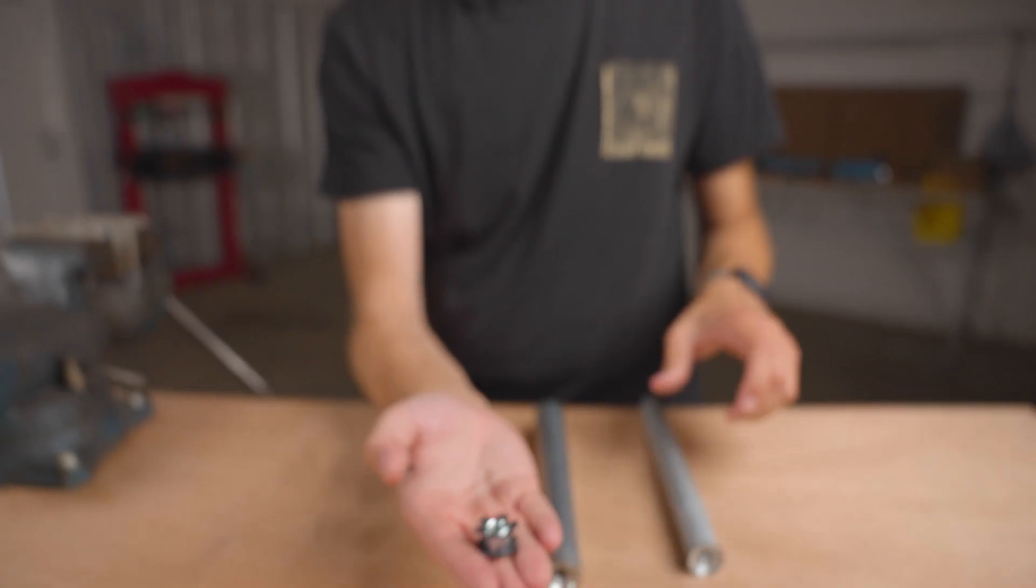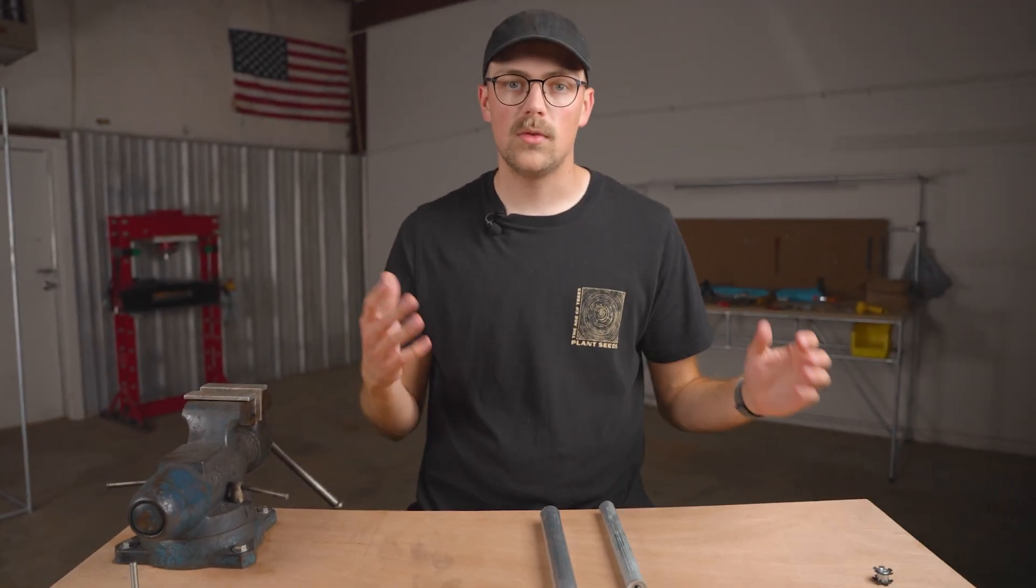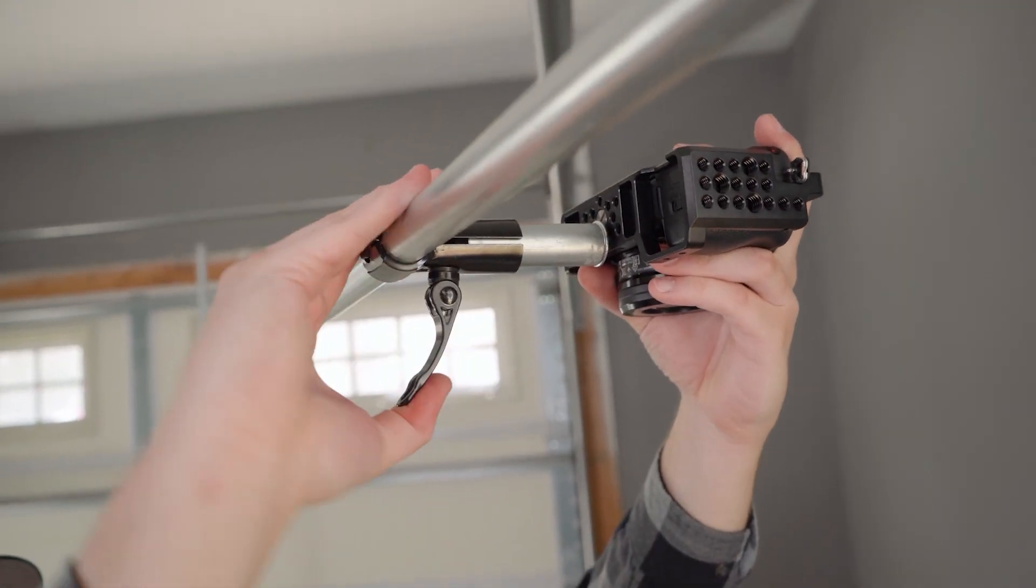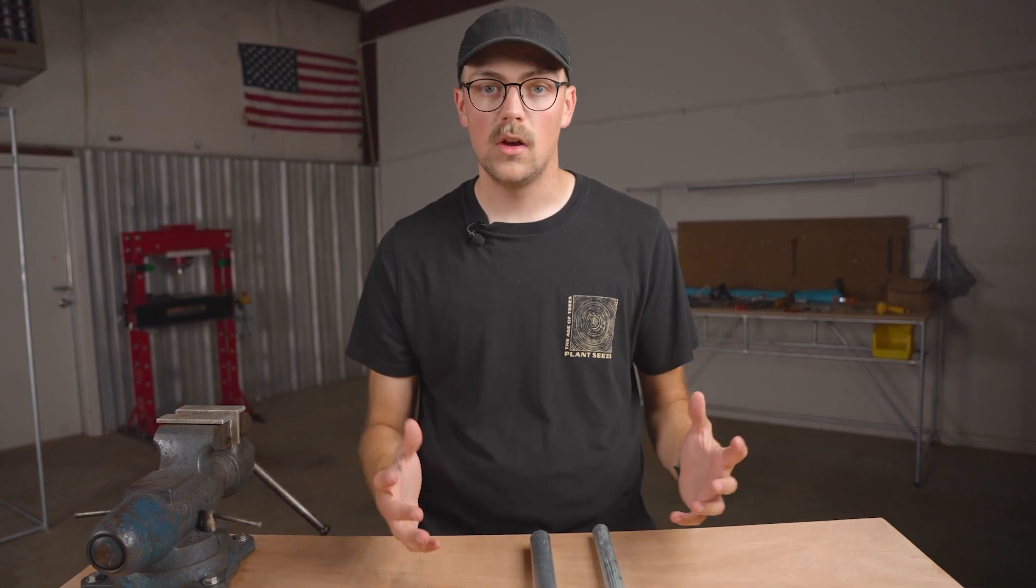And the two sizes that we have available on the website are 1/4-20 and 3/8-16 because those are super common with camera accessories and other things, just a really common size and thread count. So we've always had those, but recently I talked to a customer who had an old vintage pool table light that he wanted to adapt to his conduit frame to make a really cool lamp.